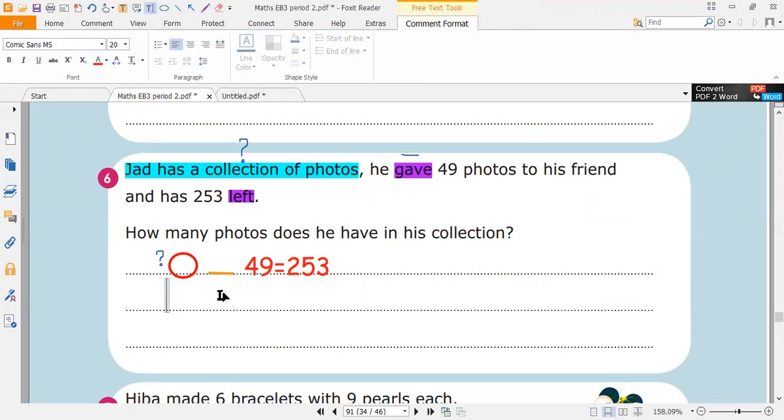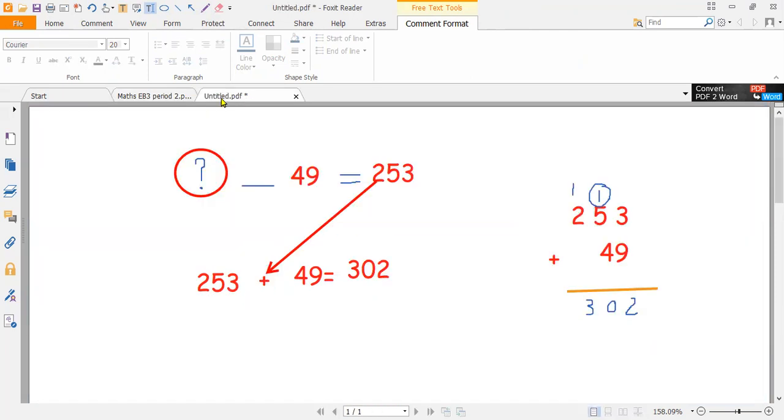Now, here we are going to write 253 plus 49. The answer is 302.